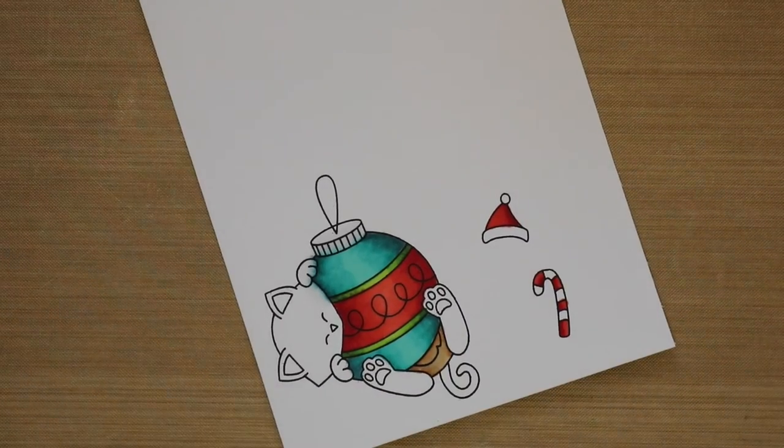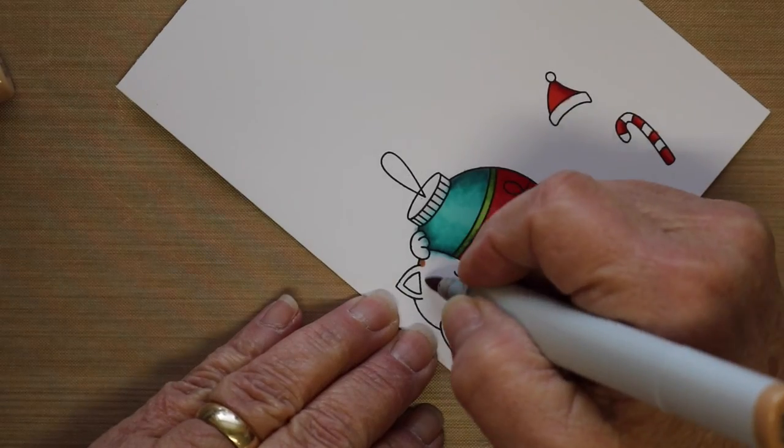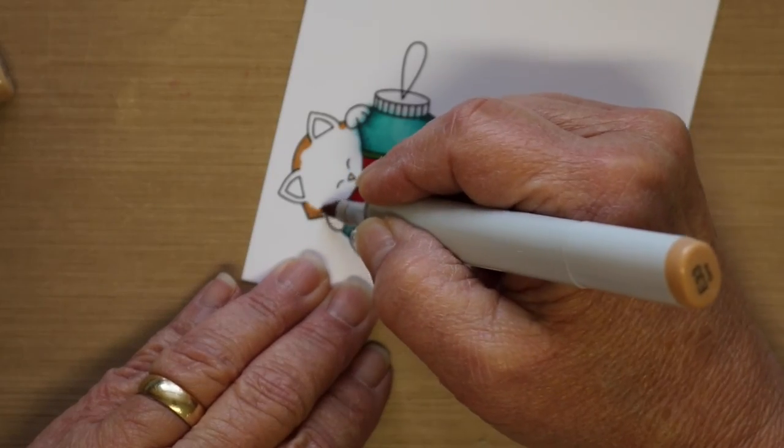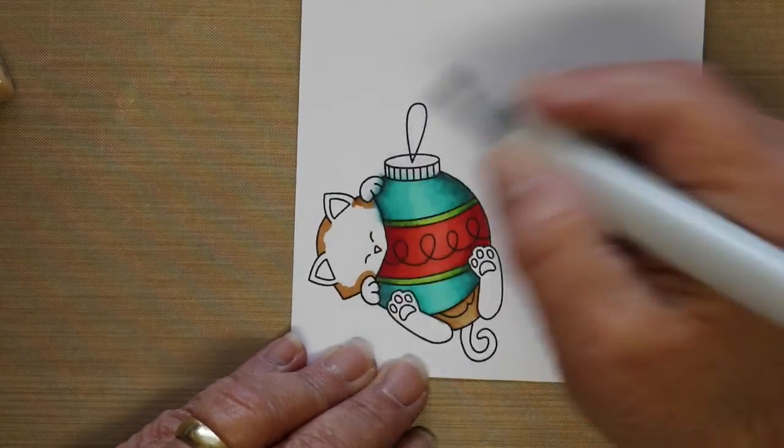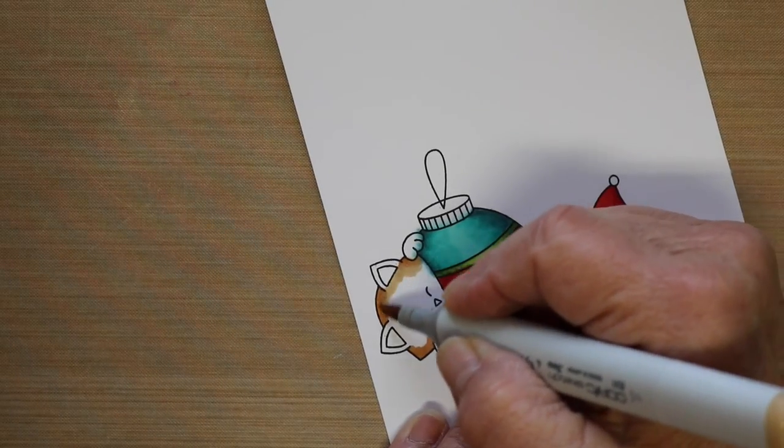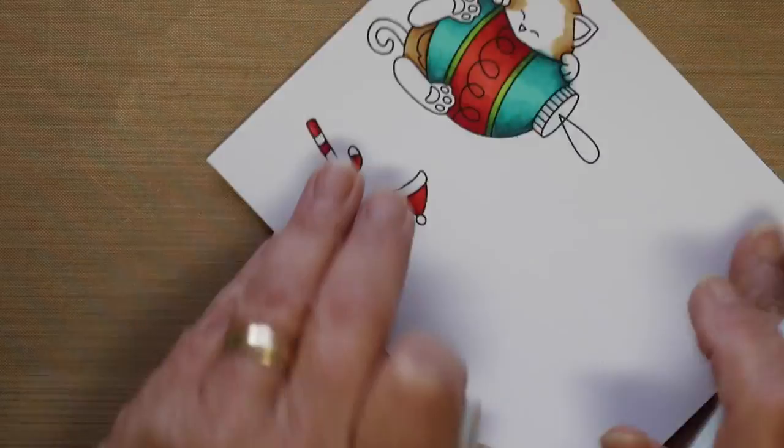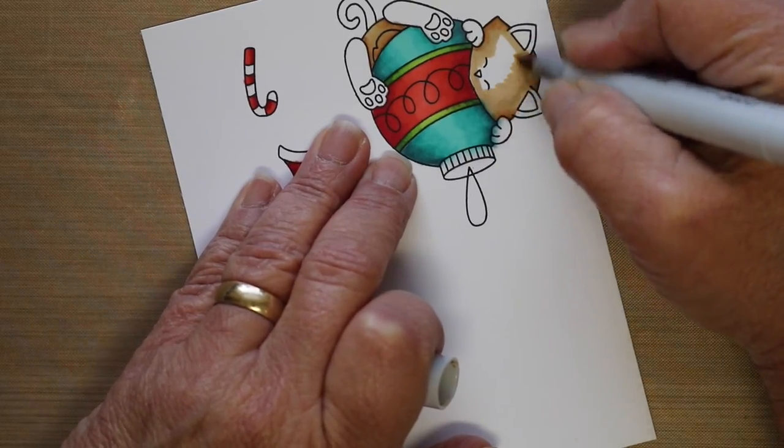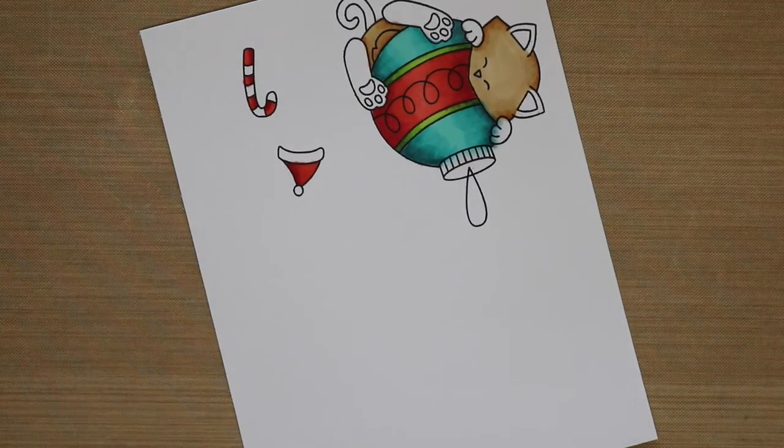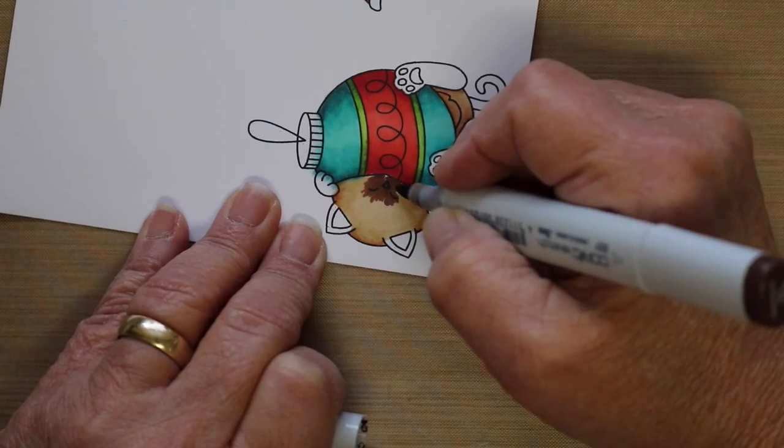So now I'm coming in with an E33 and an E31 to start coloring Newton, and I'm coloring him as a Seal Point Siamese, and then I'm going to bring in my darkest color, which is an E27.